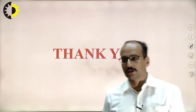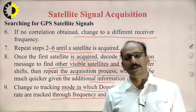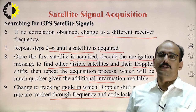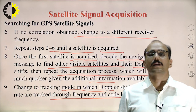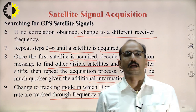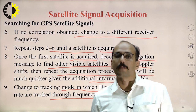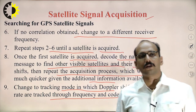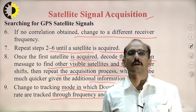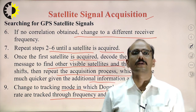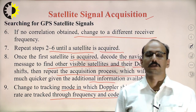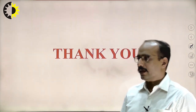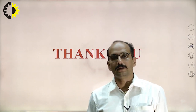In this complete process, the GPS system uses 4 satellites at a time to locate an object in 3 dimensions, following the signal acquisition process. This is the basic part of GPS and how it locates the position of an individual object. In the next lecture, we will discuss the various GPS segments and other points related to GPS. Thank you.